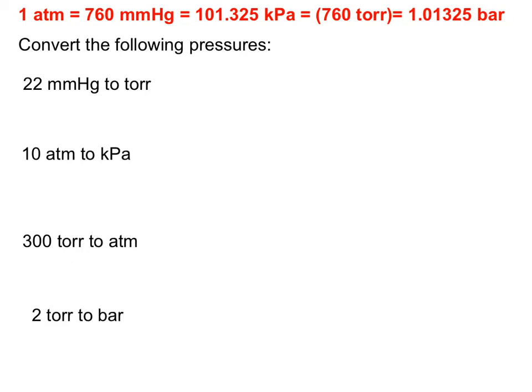Just like with any other conversion, you're going to be utilizing basically your dimensional analysis setup. What we are given is 22 millimeters of mercury, so 22 millimeters of mercury Hg. That goes into that first box.